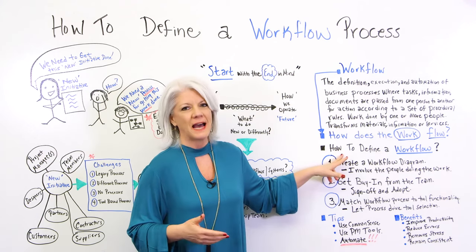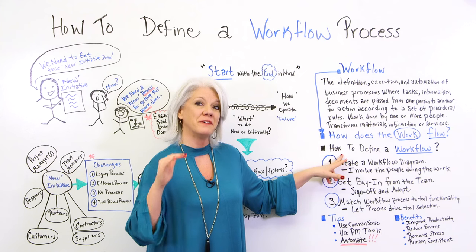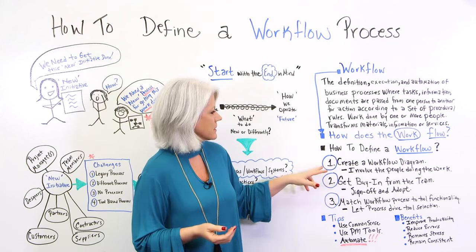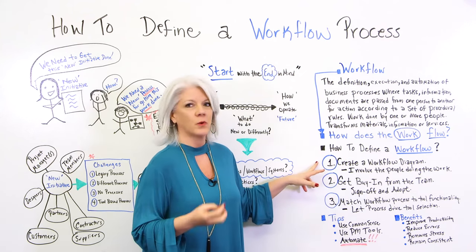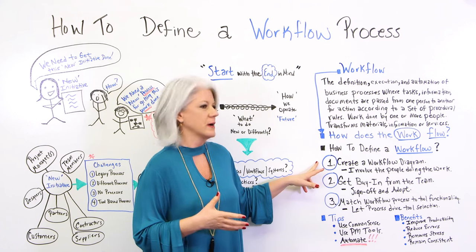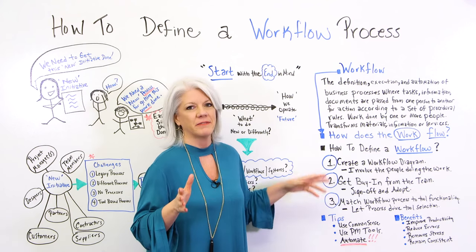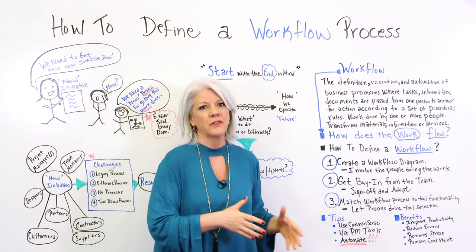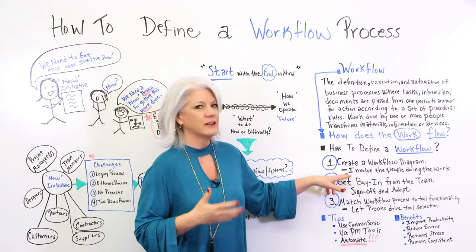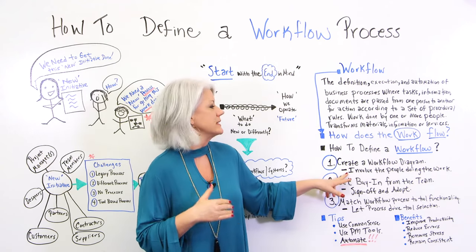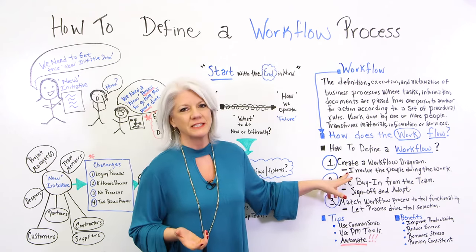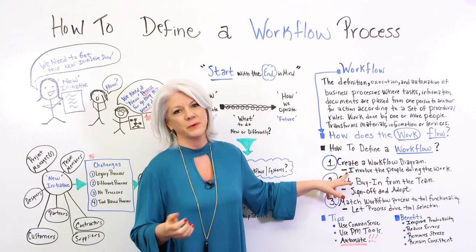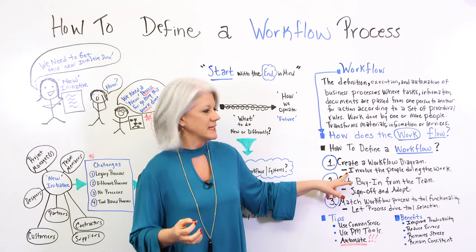Let's talk about how we define a workflow process. At a very high level, there are three main steps. First, create a workflow diagram — literally a diagram of how work passes from one person to another or from one group to another. That can get to a very detailed level, but the important thing to remember is to involve the people who are doing the work so it's realistic.